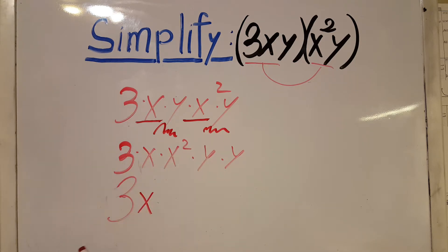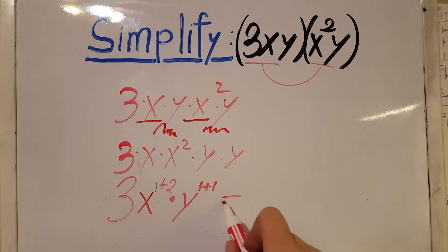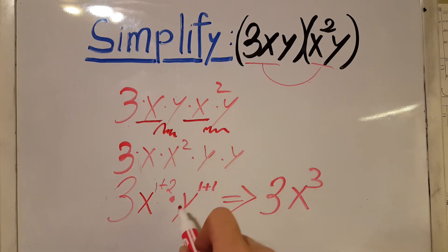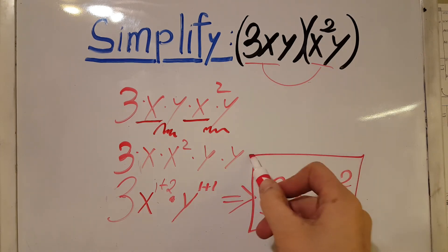Since we are multiplying, we're going to add the exponents. So here we have 1 plus 2 for x, and we're going to add these exponents 1 plus 1 for y. And it's going to give us our solution, which will be 3x to the power of 3 times y to the power of 2. And this is our solution.